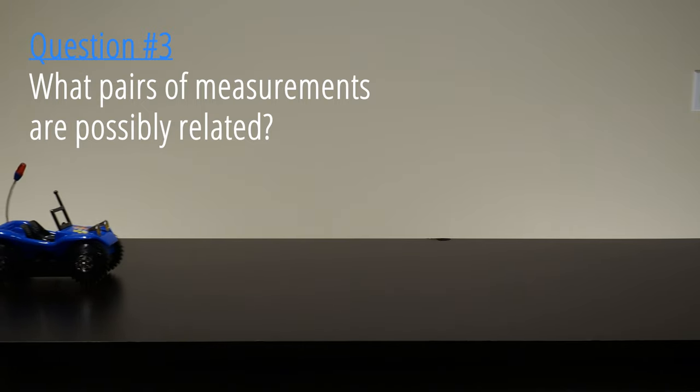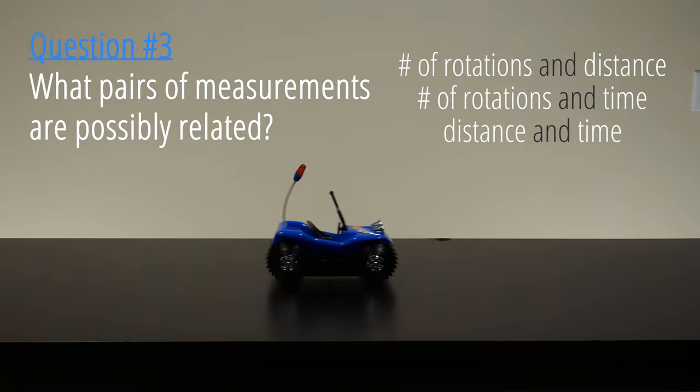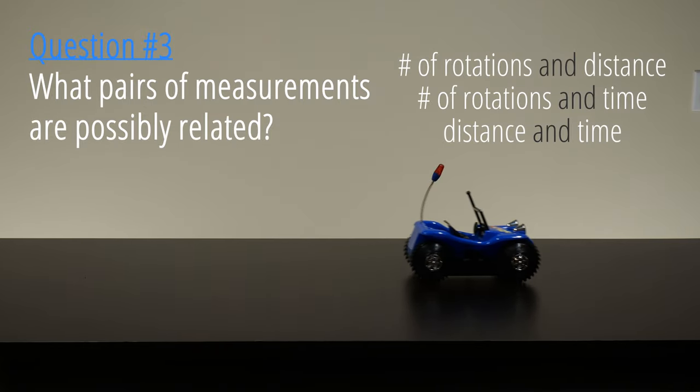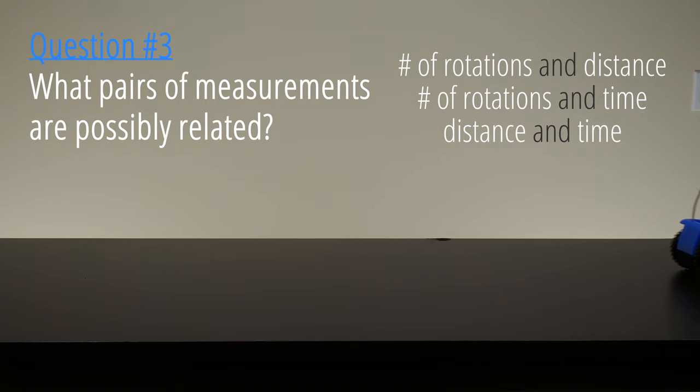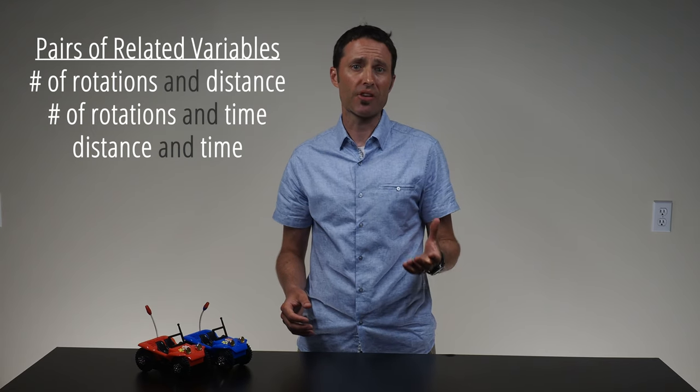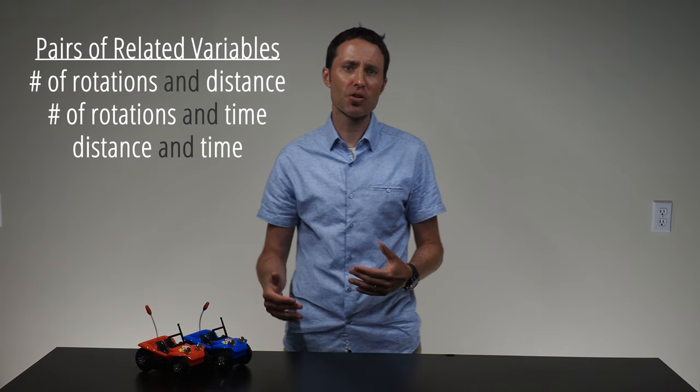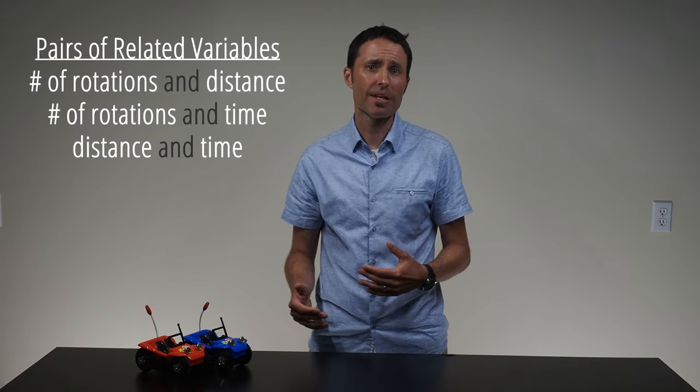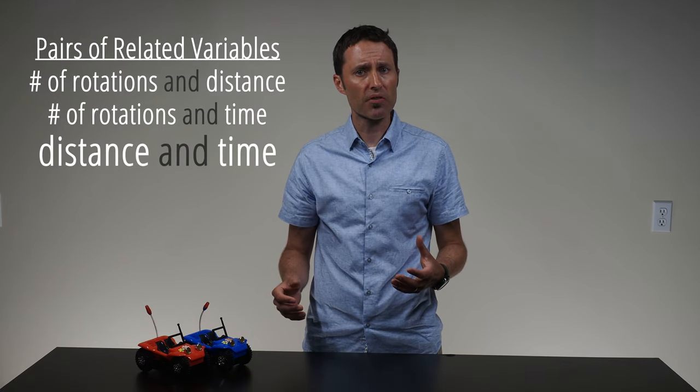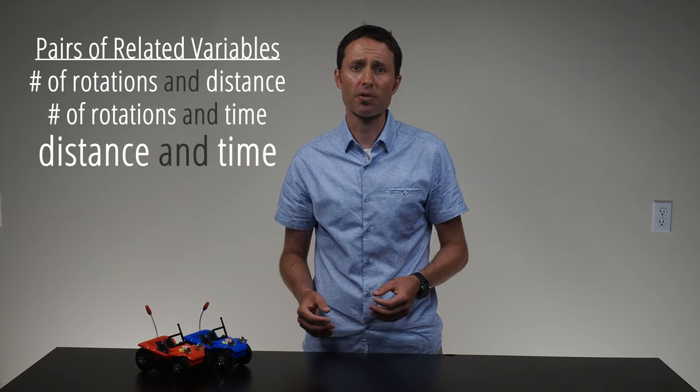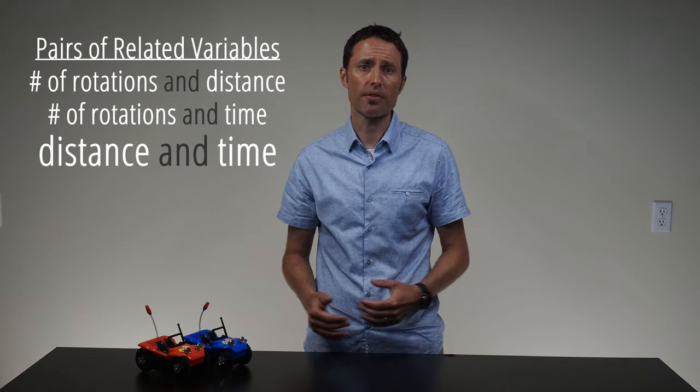Finally, ask students what pairs of measurements they think are possibly related and write these on the board. As a class, the students will investigate the relationship between one of the pairs of variables which are listed on the board. In order to reach the desired conclusion from the lab experience, you need to continue to ask students for possible pairs of related variables until they mention time and distance. Communicate that all of the listed pairs of variables would lead to interesting experiments, but for this lab experience we will focus on how distance is related to time.